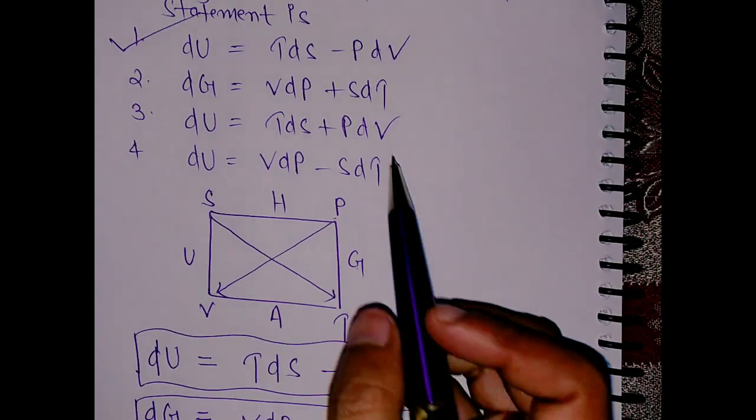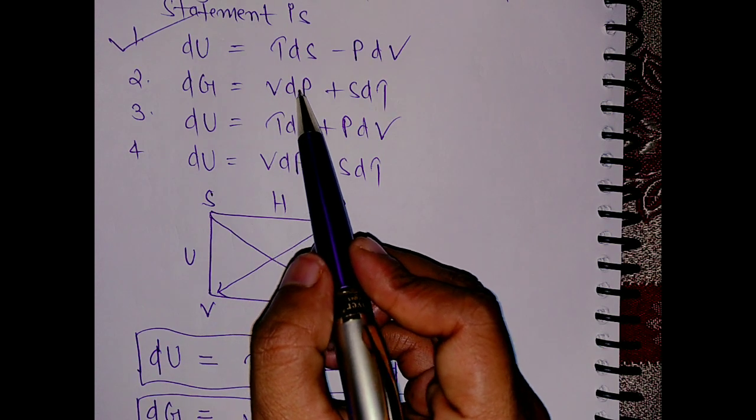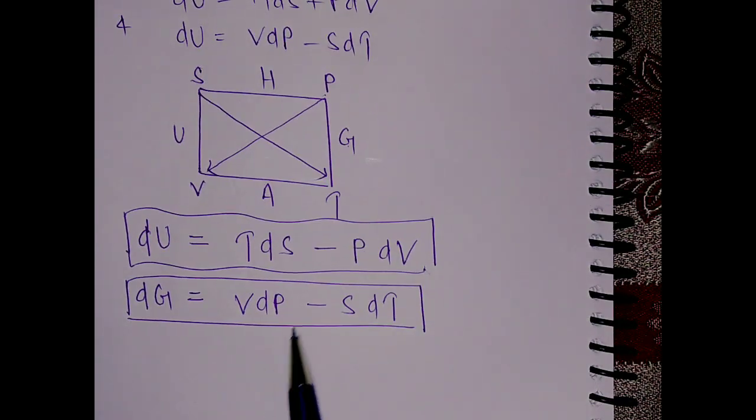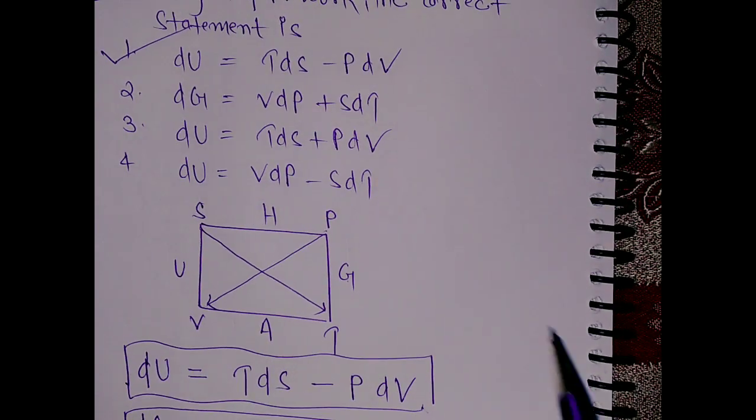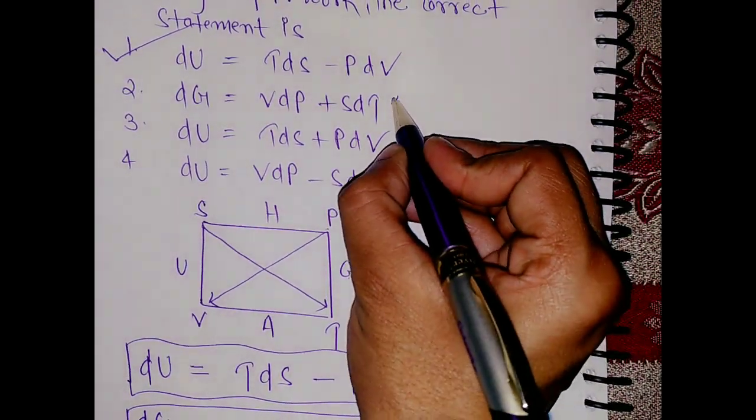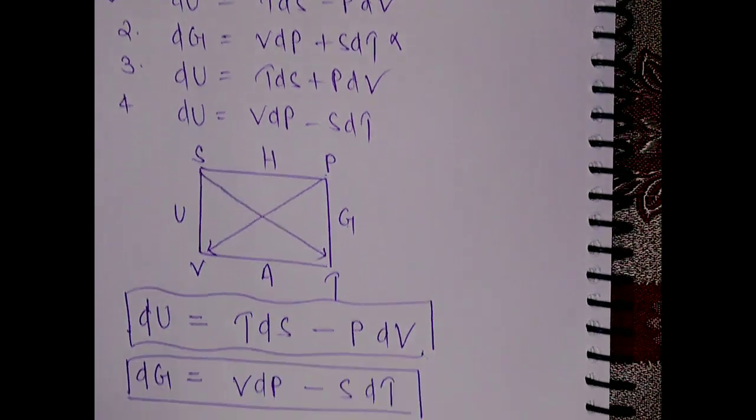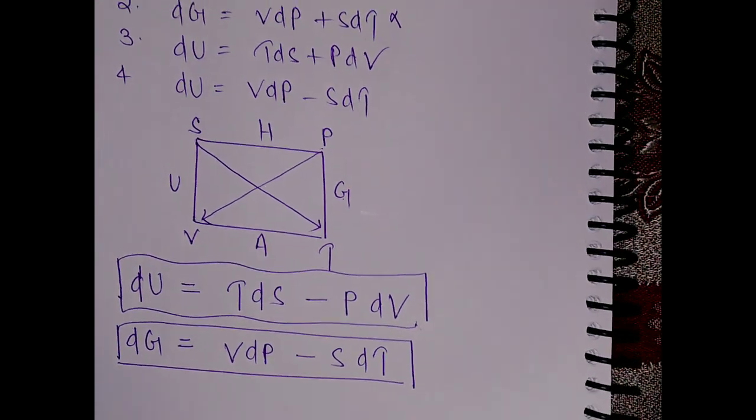Let's see in the option: VdP, this is plus but we have calculated minus, that means this option is incorrect. Let's write for dU again. dU we have already written, this is TdS minus PdV.